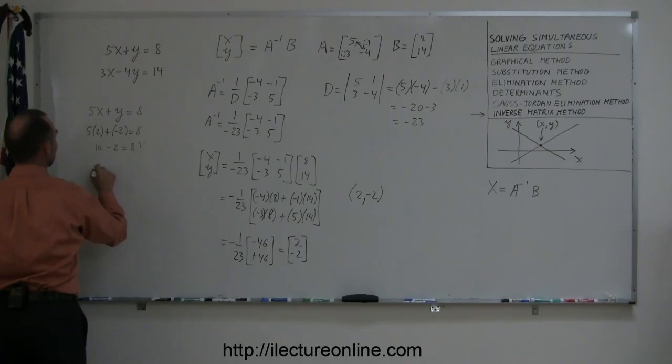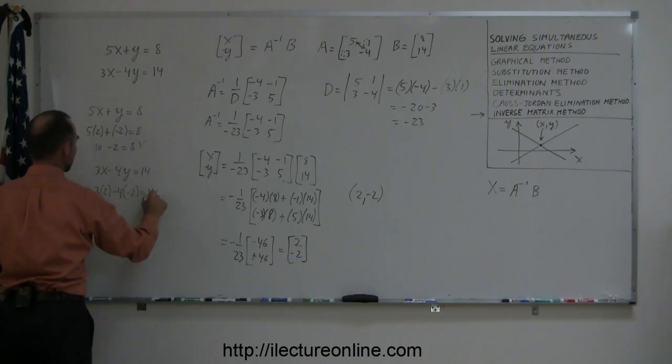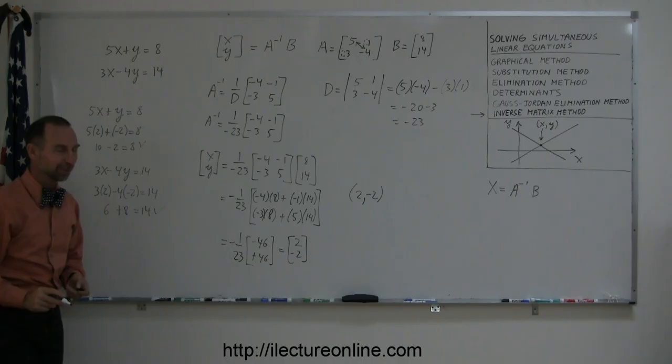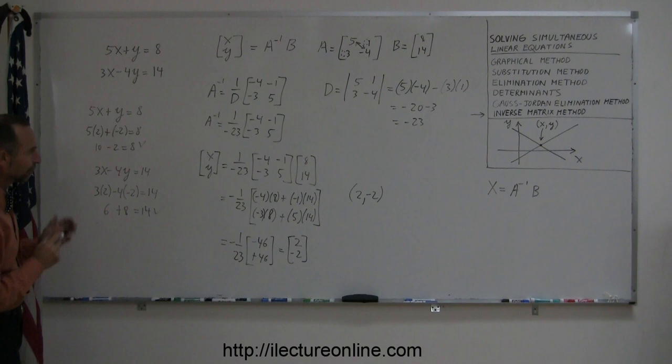Second equation, 3x minus 4y equals 14, plug in a 2 for the x, that's 3 times 2, minus 4 times negative 2, is that equal to 14? We have 6 plus 8, yes indeed, that's 14. So at least we know we did it correctly. Basically, it's very easy to make a mistake in these types of problems, so you have to be very careful and go very systematically.